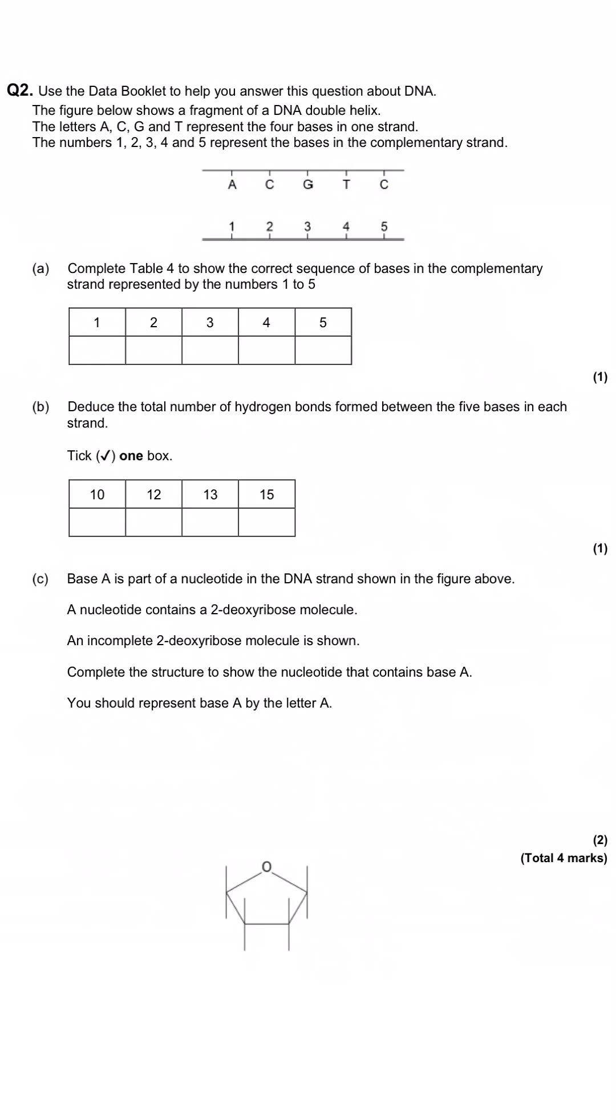In this next question about DNA, we dive straight in with questions about the complementary nature of that DNA base pairing. So remember, that means the A must go to T and the C must go to G. And so what they ask us to do in part A is to show the correct sequence. So if this top strand goes A, C, G, T, C, that means that position number one must be the T base pair, because it goes A to T and it goes C to G and G to C. T must go with A and C with G. And all of that is necessary for the one mark.